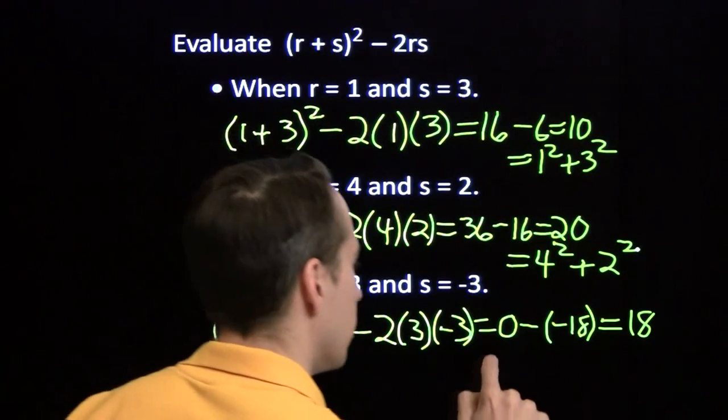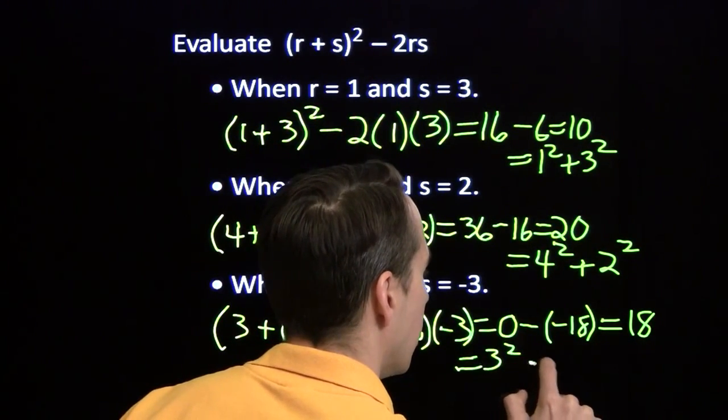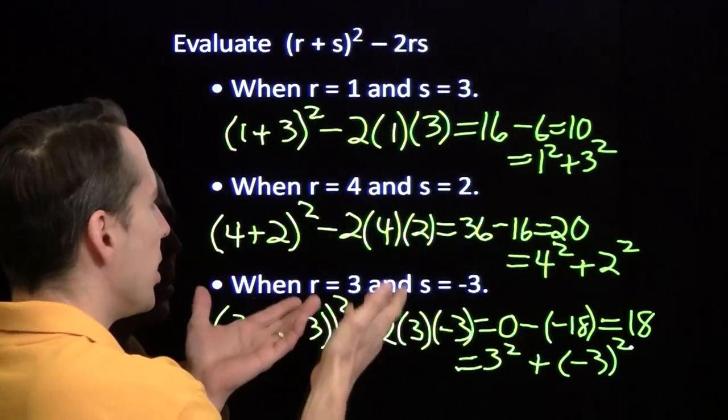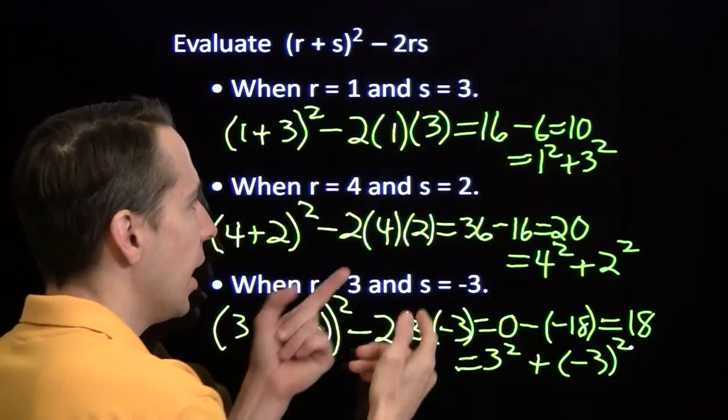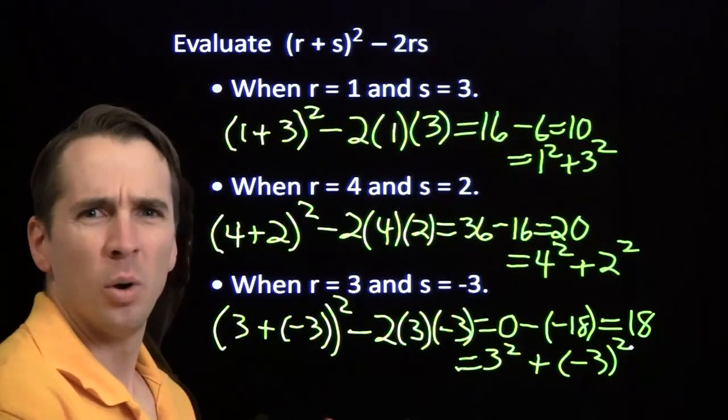18 is 3 squared plus negative 3 squared. Each time, I substituted in the values, and I ended up getting the sum of their squares. What's up with that?